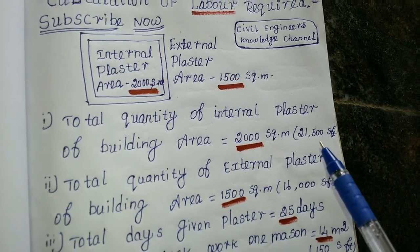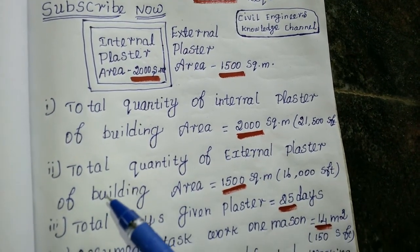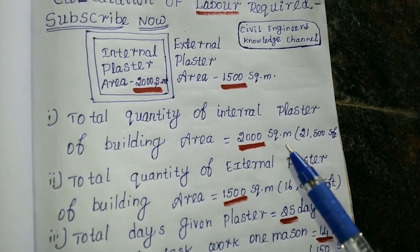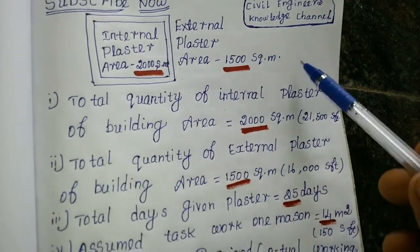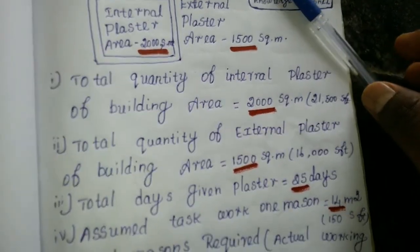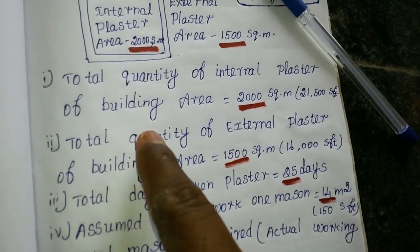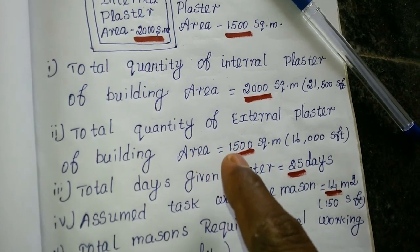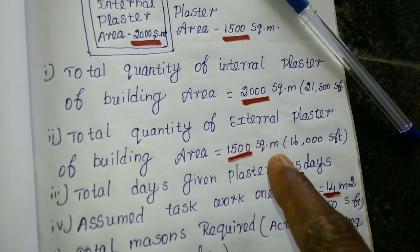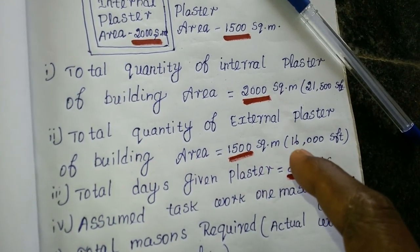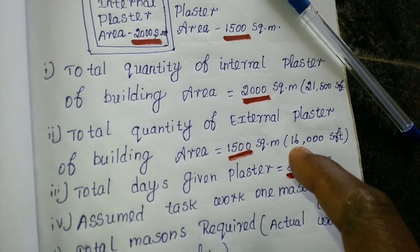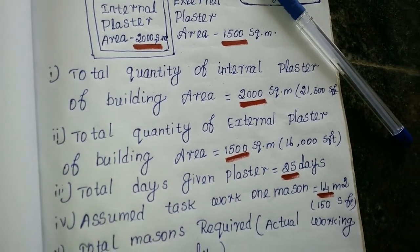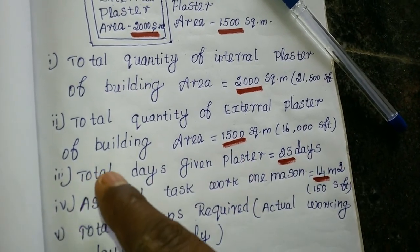That is 21,500 square feet, which equals 2,500 square meters. The total quantity of external plastering of building area is 1,500 square meters, or 16,000 square feet.